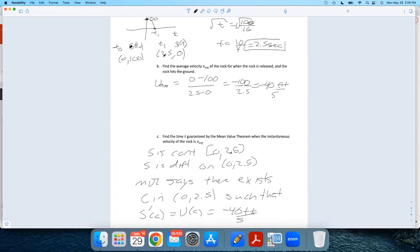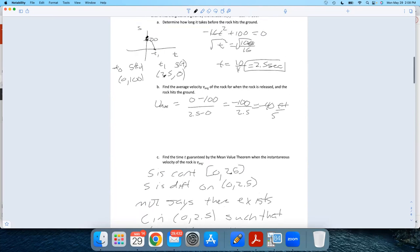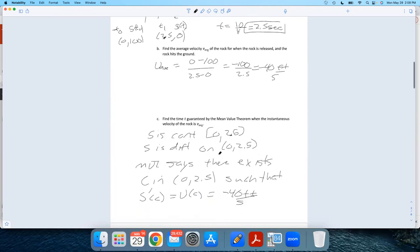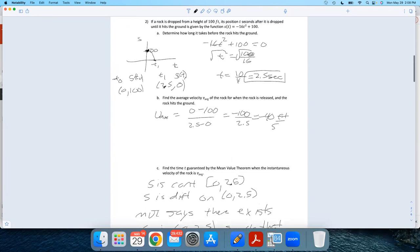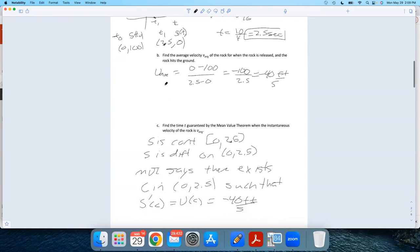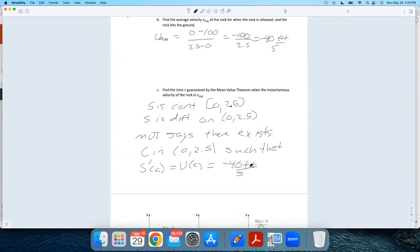The Mean Value Theorem says there's some point in that interval when you're going exactly that value. There is some moment when this rock was dropping when it was going exactly 40 feet per second down. See, it starts at zero velocity because we just let go. When we hit the ground, it's going faster than 40. But somewhere in here, it was going exactly 40 feet per second down.